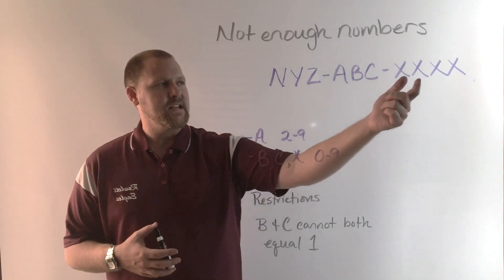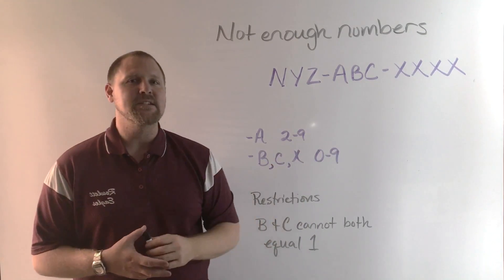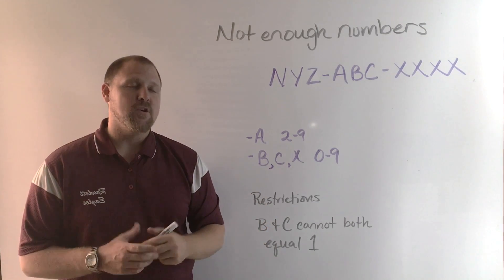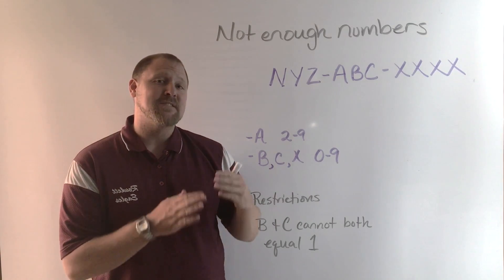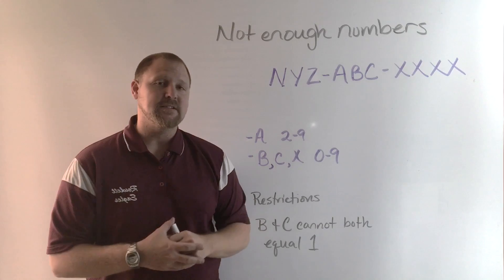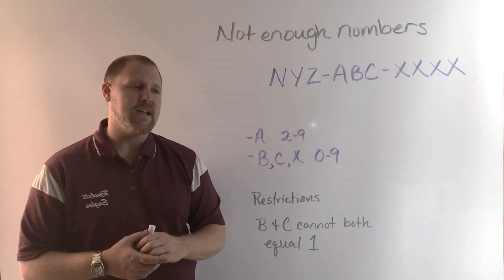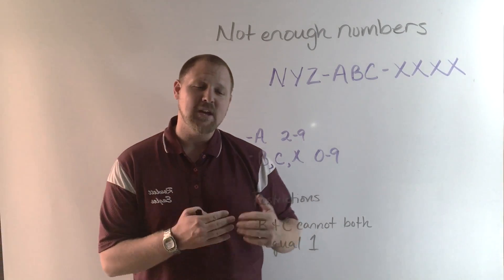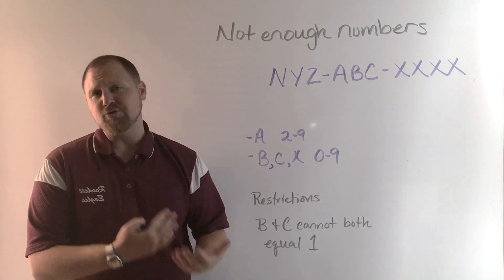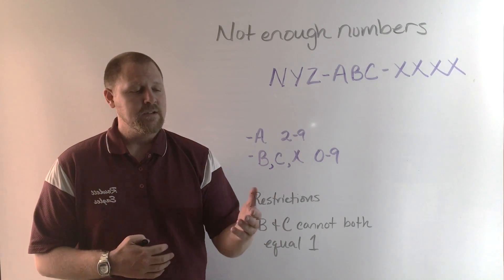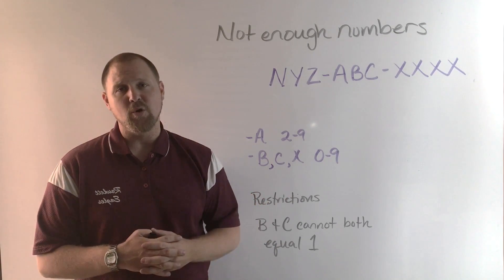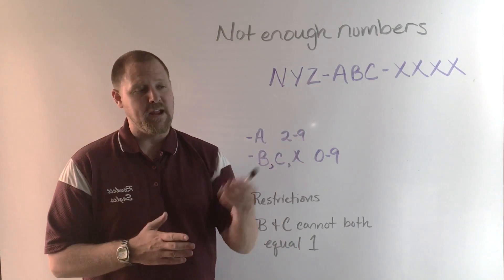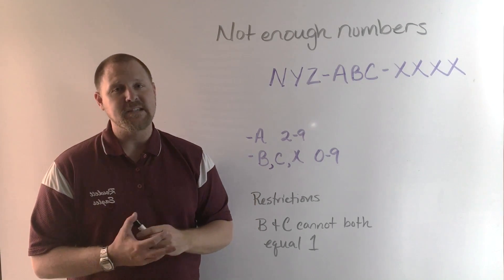Here we have ABC-XXXX. That is 7 different events that happen in order to create one 7-digit number. Our counting principle is going to have 7 events that we have to find the options for each one. A can be any number from 2 to 9. B, C, and X can be any number from 0 to 9. Then we have some restrictions. There's more restrictions on the worksheet, but I just want to come up with this one: B and C cannot both be equal to 1. We have to account for these restrictions whenever we get our answer.